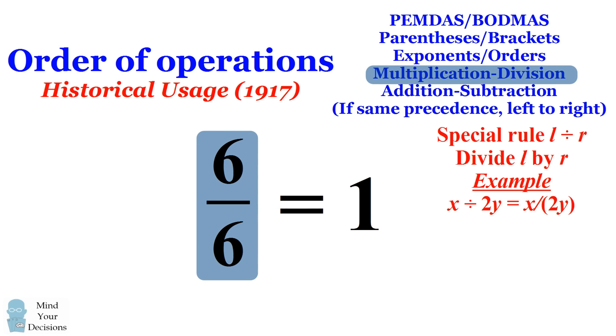Today we don't use this practice because it can be confusing. Instead we follow the order of operations. If we want to have a fraction we will put it as an expression like 6 over 6 which is written here. So the correct answer to this problem is 9 but there is some historical justification for the answer 1 but it's not how we would interpret the problem today.